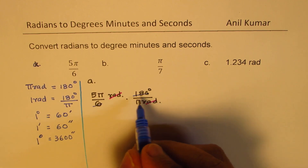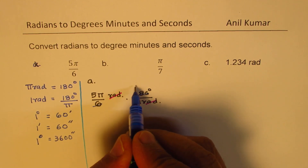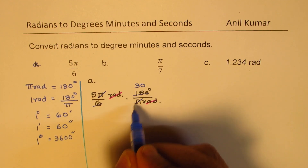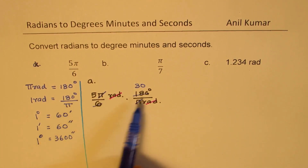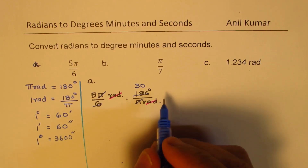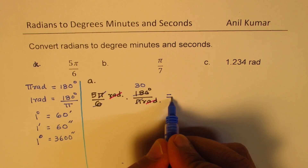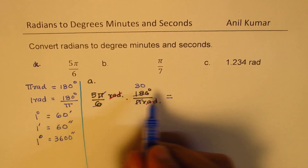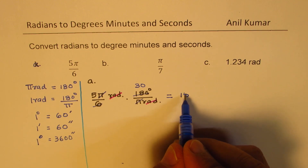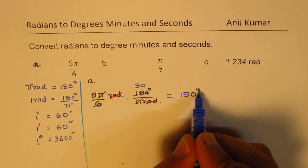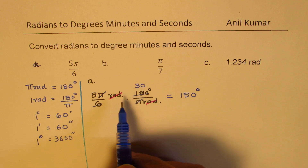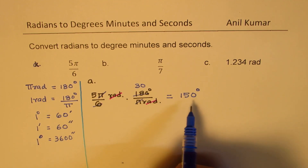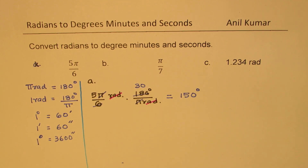We can simplify: 6 divides into 180 thirty times, and π cancels with π. So what we get is 5 times 30, which equals 150 degrees. In this case we are able to get the answer directly in whole degrees.